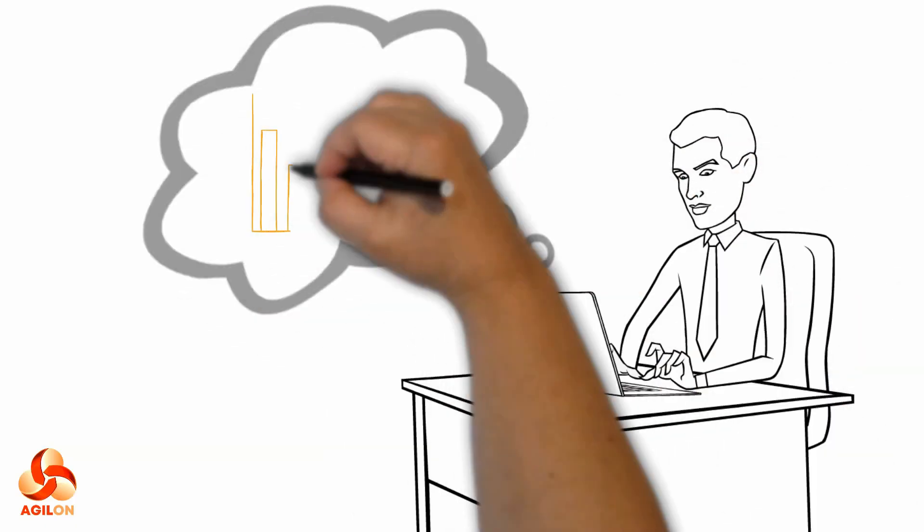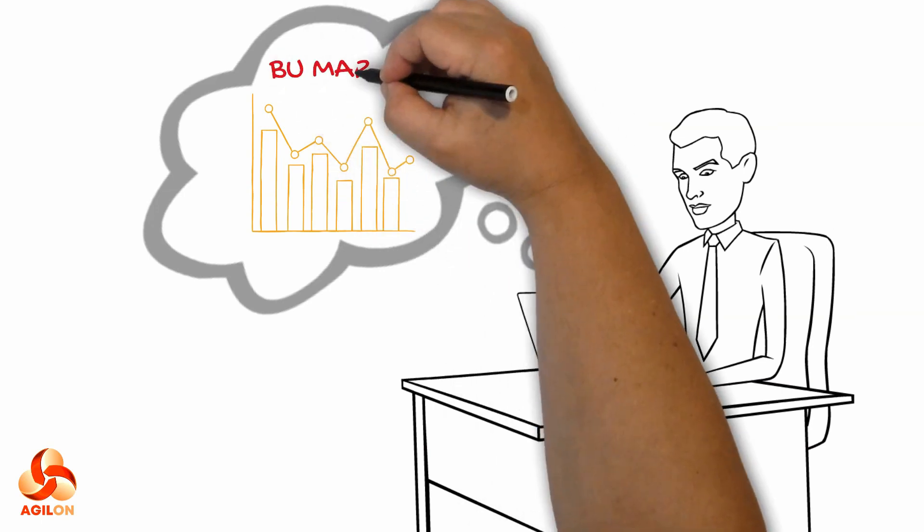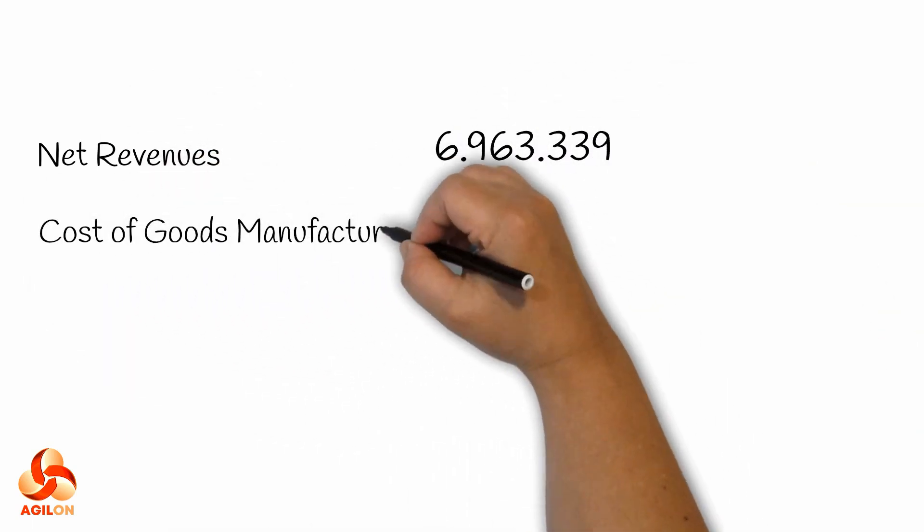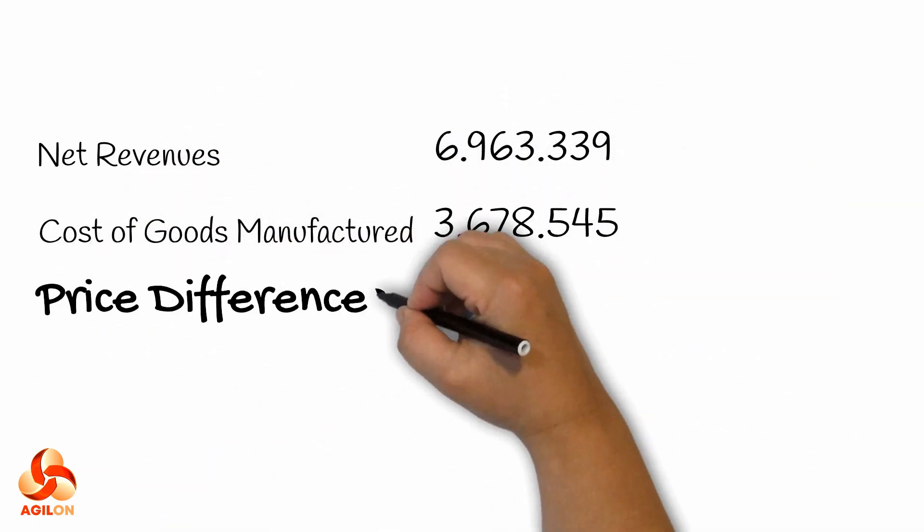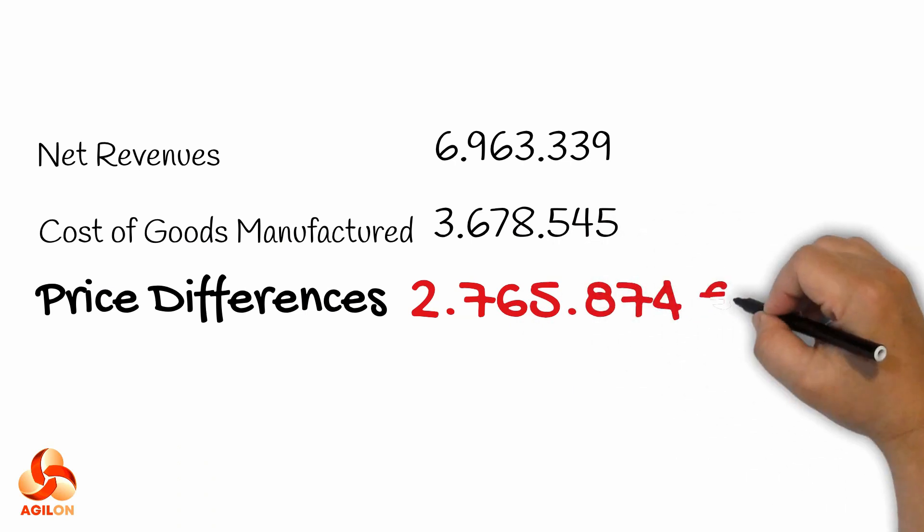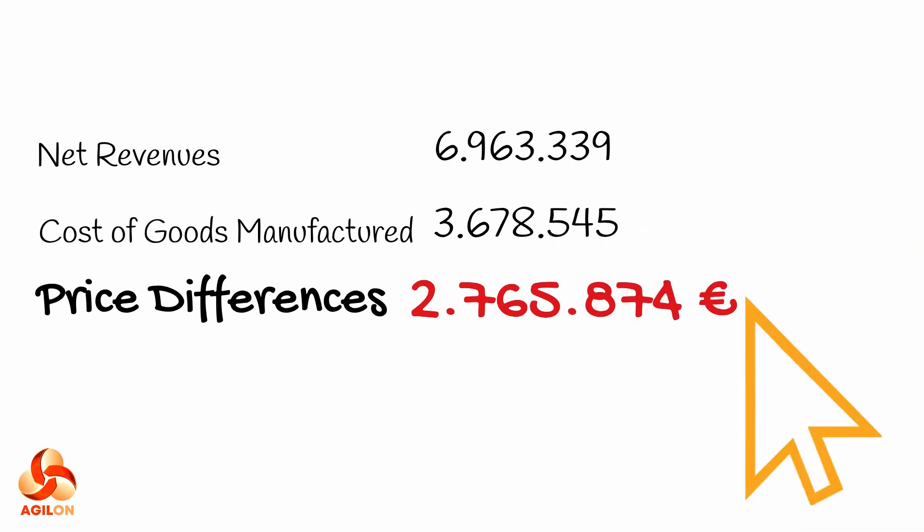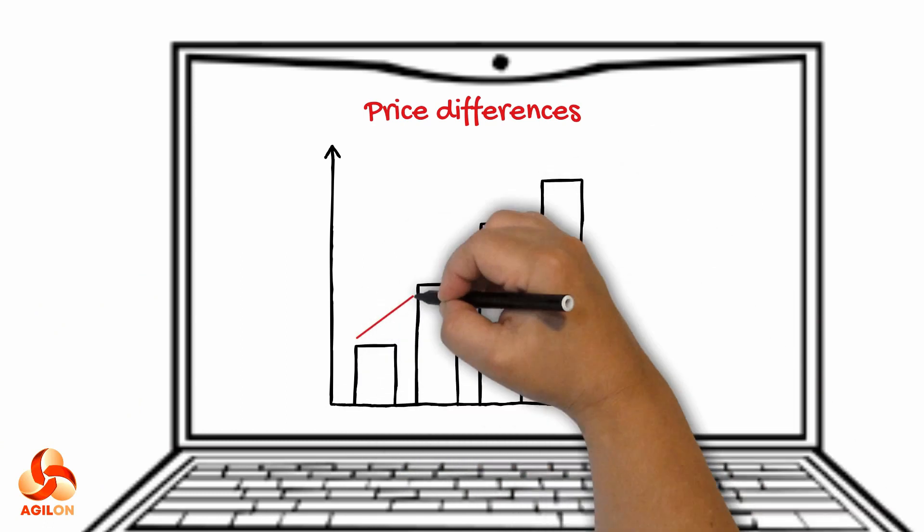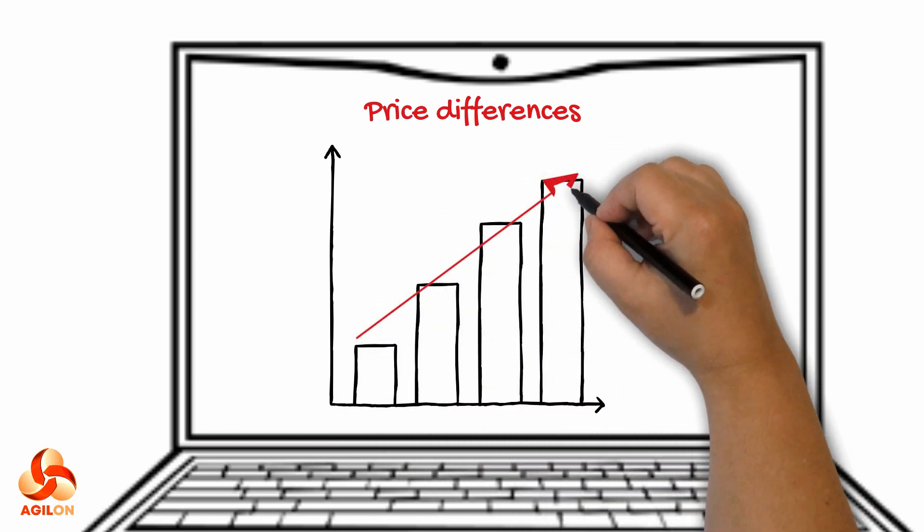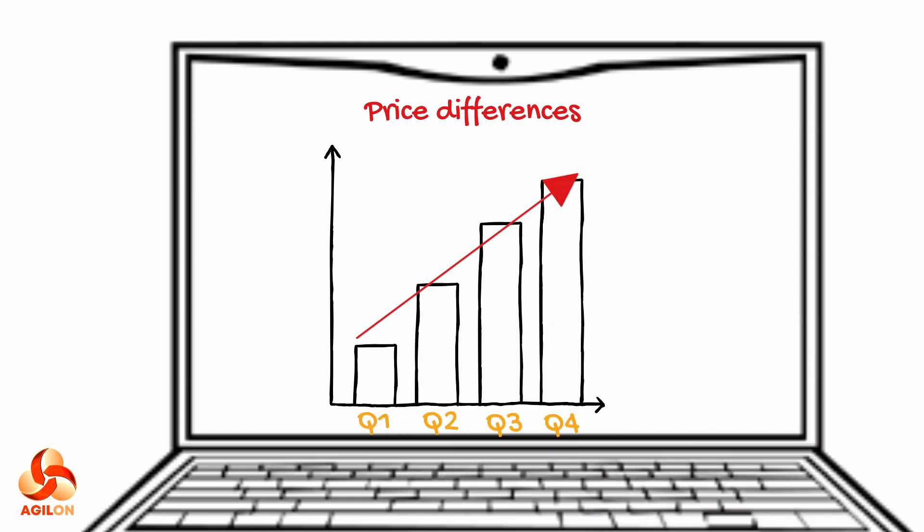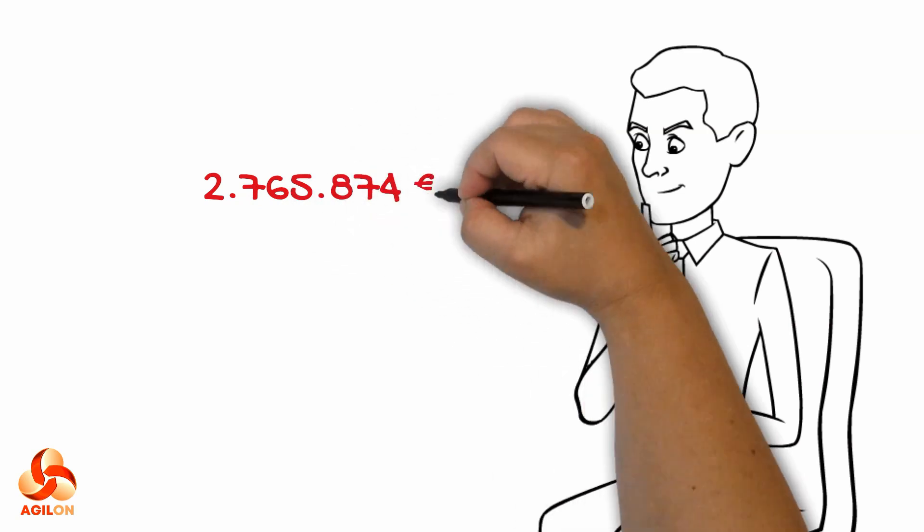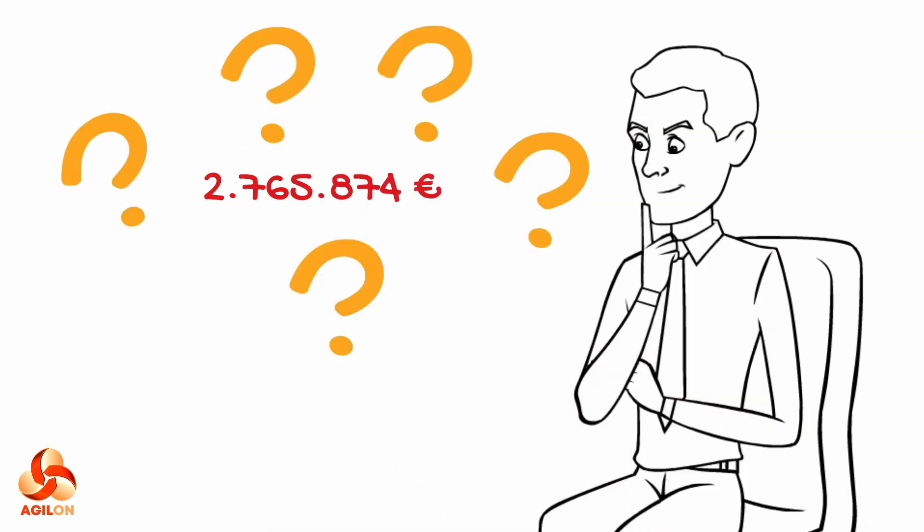A BU controller of a large manufacturing company named Alex is going through the quarterly results of a business unit. All of a sudden, he notices an unusual high-cost block named price differences on the profitability report below the cost of goods manufactured. Comparing it to the results of previous quarters, Alex notices a trend. With each passing quarter, the price difference increases by 5%. He wonders what the reason for this trend could be and what exactly is behind these puzzling numbers.